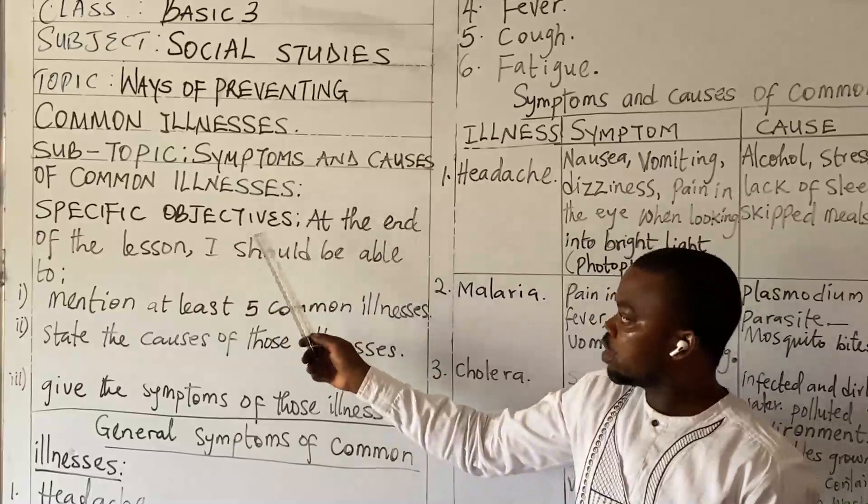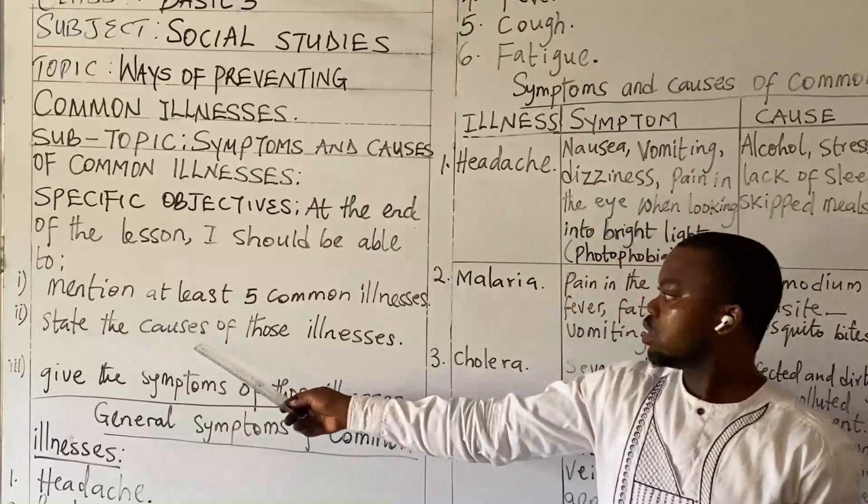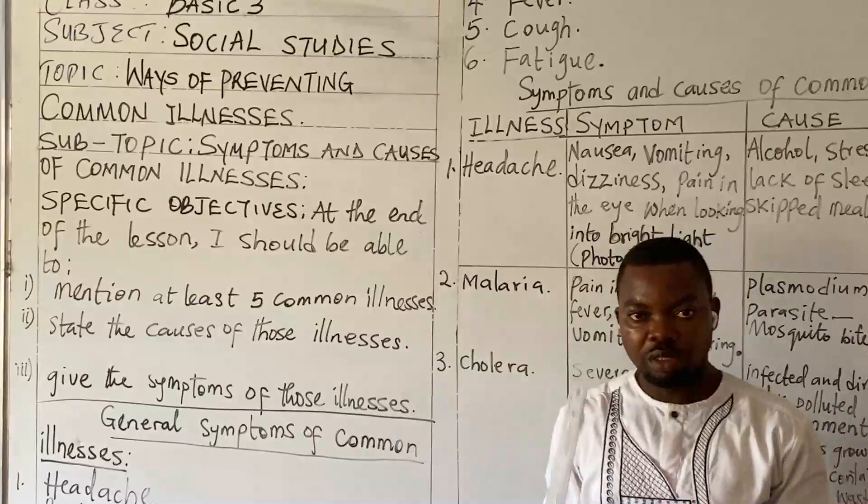So, symptoms and causes of common illnesses — specific objectives. At the end of the lesson, I should be able to: one, mention at least five common illnesses; two, state the causes of those illnesses; and three, give the symptoms of those illnesses.